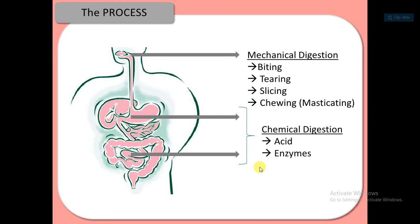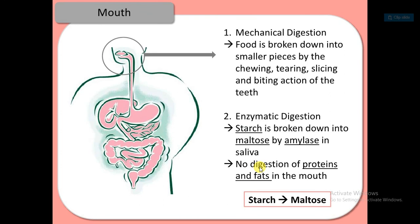In the mouth, mechanical digestion involves food being broken down into smaller pieces by chewing, tearing, slicing, mixing and the biting action of the teeth.